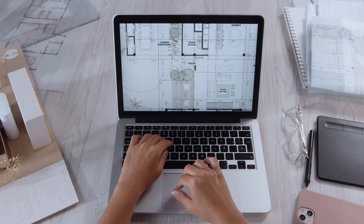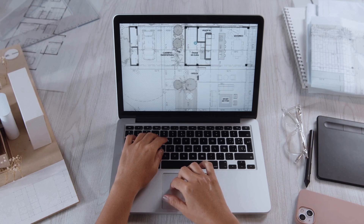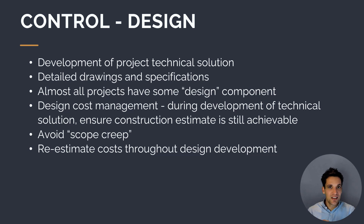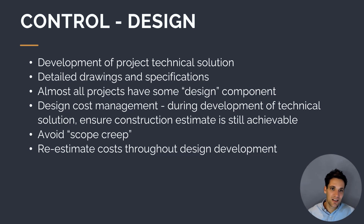Once we've set up our budget, we also need to manage design costs. Design is the development of the project's technical solution, and depending on the scope, we may be responsible for developing the design. If so, we need to manage the design process to ensure that what we're specifying we need to build, we can build for within our estimate. One of the easiest ways to save money — but also blow our budget — is through the design process. If we design something expensive to build with unnecessary features, it's very easy to blow our budget. We want to avoid scope creep, which is the addition of unnecessary costly features to the design.